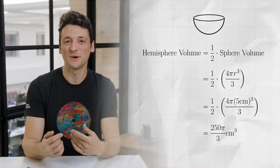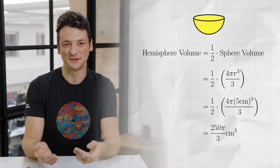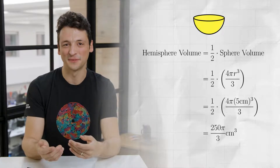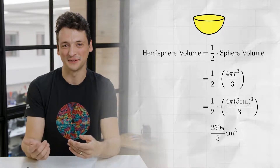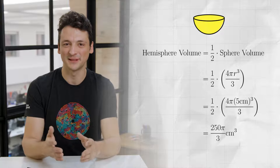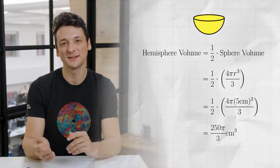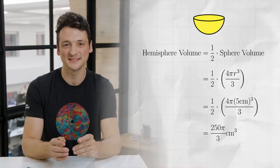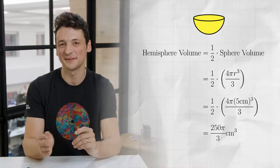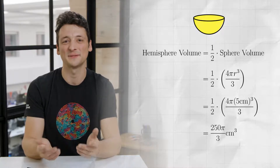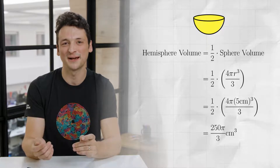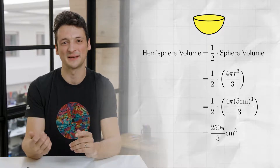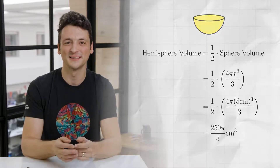Let's remember the relevant formulae. The hemisphere's volume is one-half the sphere's volume, four-thirds pi r cubed, so we can plug that in and then plug in 5cm for the radius. Simplify the whole thing to get the hemisphere's volume is 250 pi over 3 cm cubed.